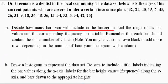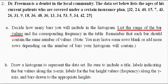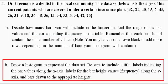So now that we have decided on how many bars to include in our histogram, listed the range of the bar values, and the corresponding frequencies, we can move on to part B, which asks us to draw a histogram to represent the data set. It also requires that we include a table, labels indicating the bar value along the x-axis, labels for the bar height values along the y-axis, and bars drawn to the appropriate heights.